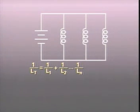The formula expressing this is the reciprocal of L sub t equals the reciprocal of L sub 1 plus the reciprocal of L sub 2 and so on for all the parallel inductors. Again, the formula is the same as for resistors in parallel.